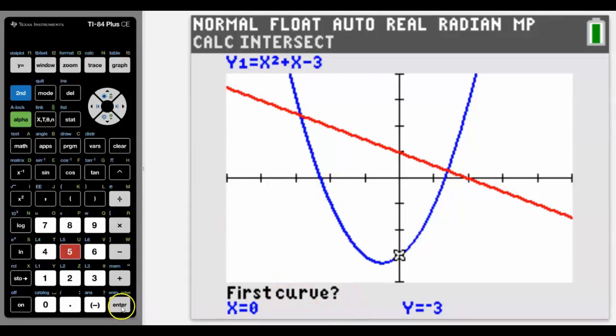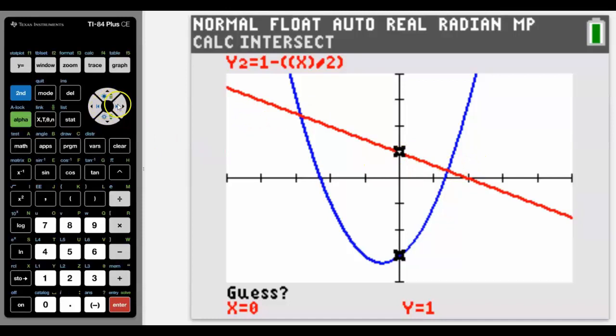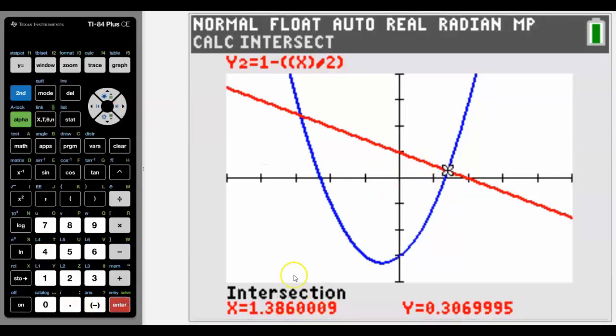It asks us to choose the first curve, and the nice thing about having the CE is that it's color, so we know it's the blue curve and the red curve or the straight line that's the second one, and then we've got to guess. The reason we want to guess is that there's two intersects, so we need to move the cursor to the one that we want to find the answer to. So if we press enter now there's the intersect point.